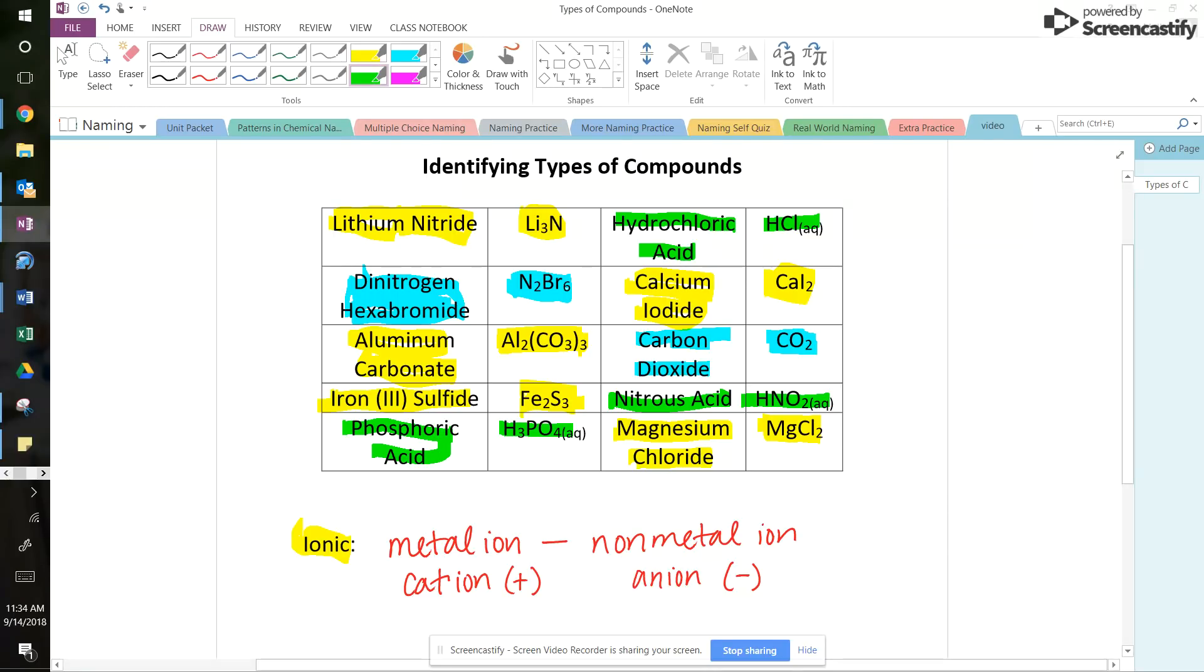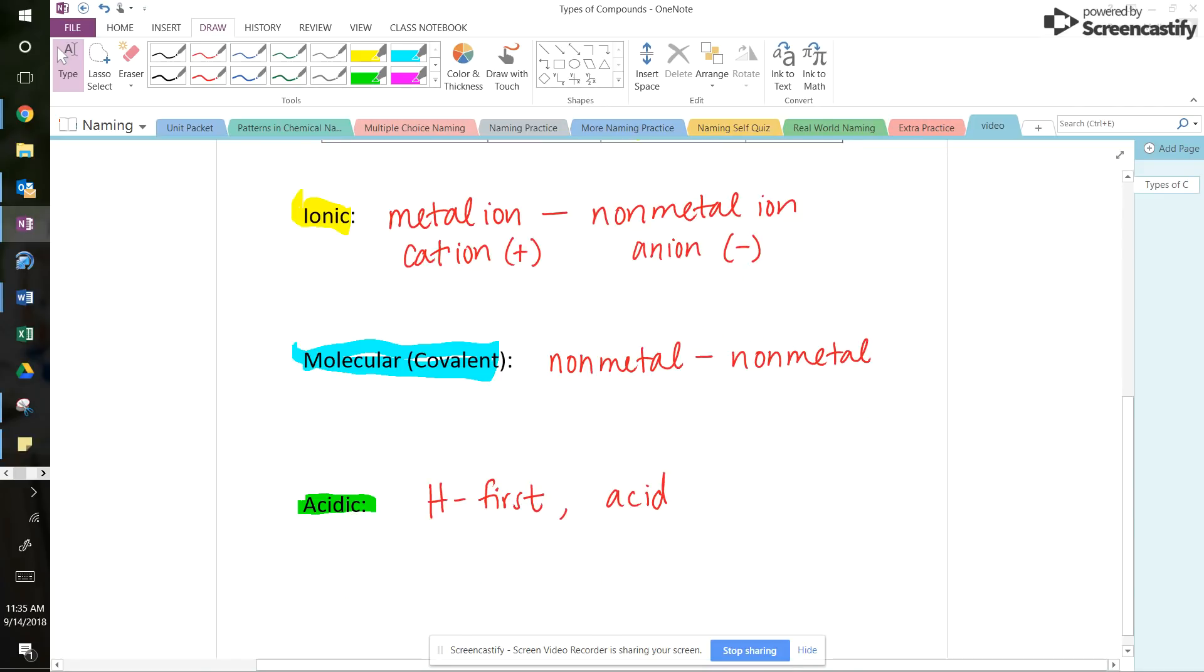So guys, what you need to do now is you need to go take that learning central quiz that deals with identifying types of compounds. And you can take it as many times as you need to, but you need to get a hundred percent before you move on. So we've got ionic compounds, which consist of that metal with the non-metal, moleculars with two non-metals, but not hydrogen. And then our acids where the name ends in acid or the formula hydrogens first. We did it.